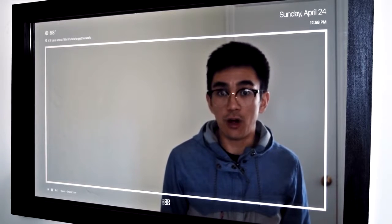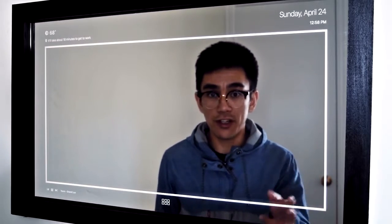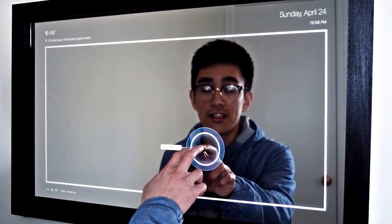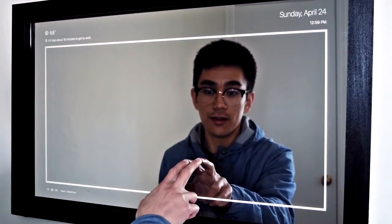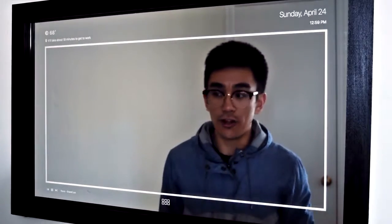Now if I wanted to control the volume, all that I would have to do is hold up two fingers up against the mirror and slide my fingers up or down. Again, that's two fingers, and slide up or down in order to control the volume.